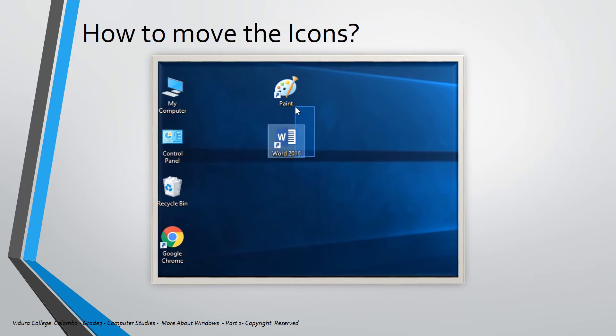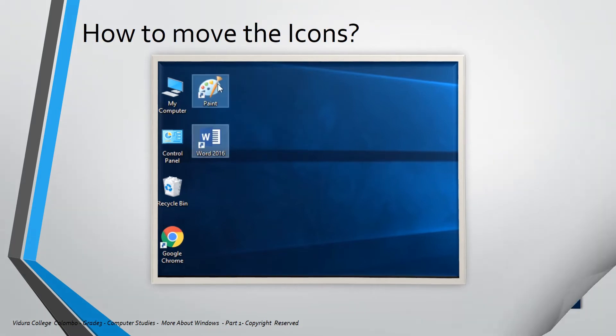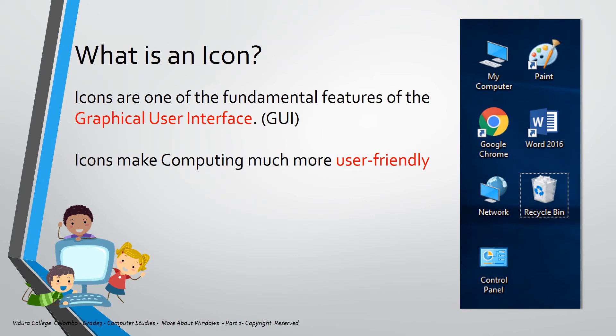Now I am going to rearrange the icons. Icons are one of the fundamental features of the graphical user interface — usually we pronounce this as GUI. Icons make computing much more user friendly. User friendly means, for example, if you want to open the Paint program, what you have to do is double click on the Paint icon, and then the Paint program will be opened.